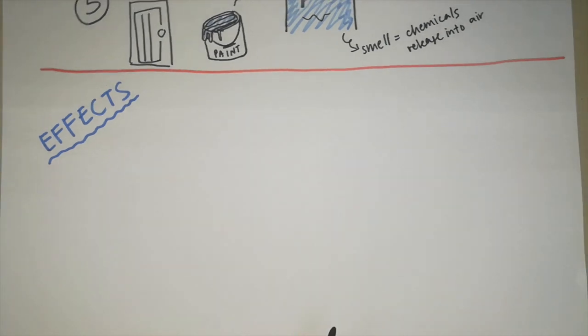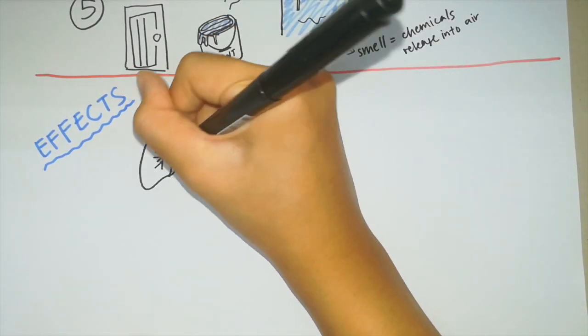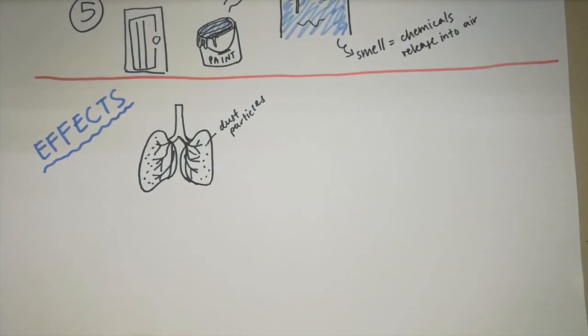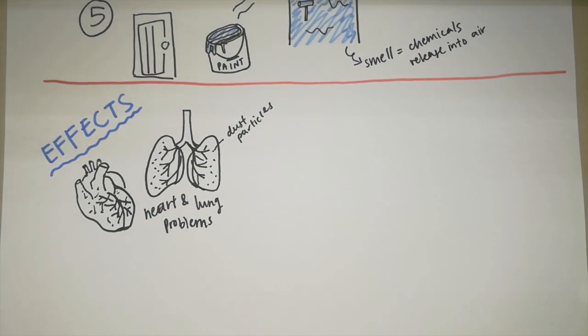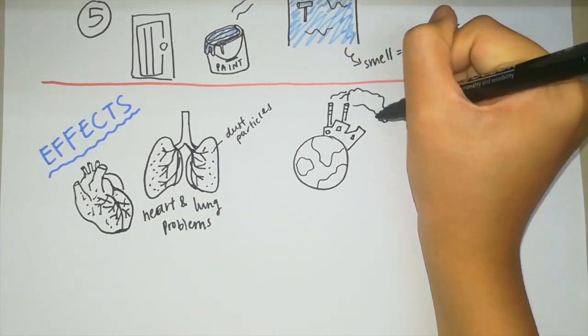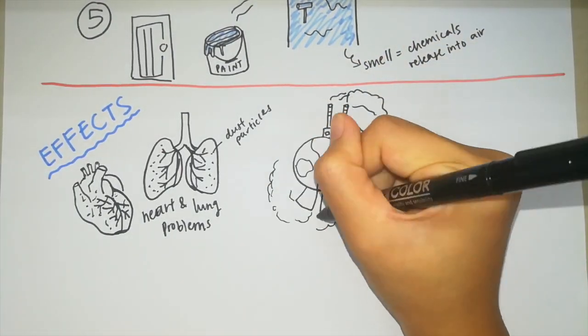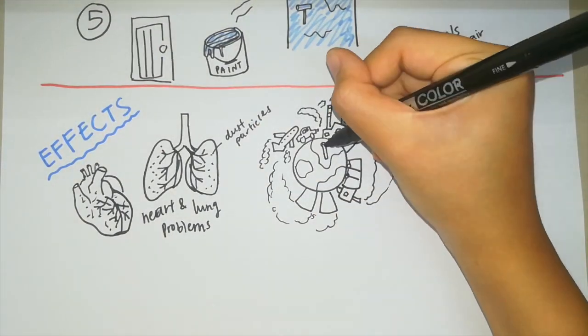The effects of air pollution: They are respiratory and heart problems. For example, when huge amounts of dust particles and pollutants are stuck inside your body and lungs, making it difficult for people to breathe and causing heart problems.